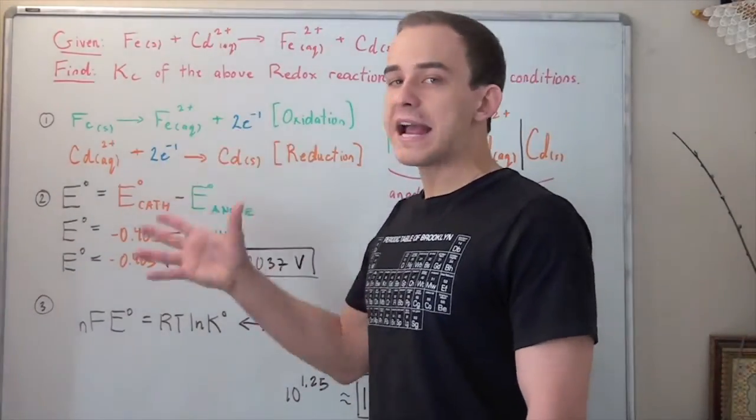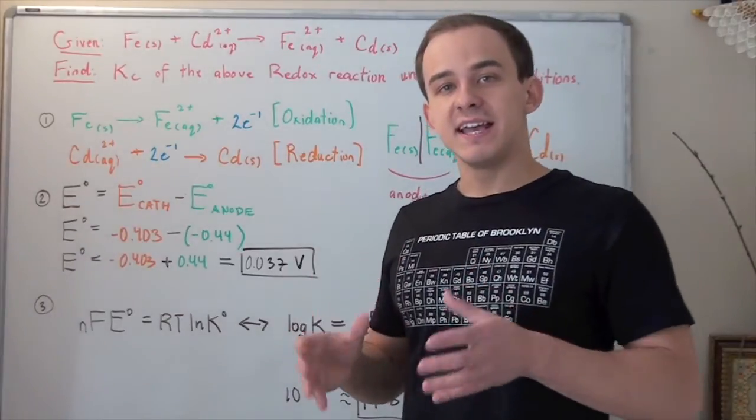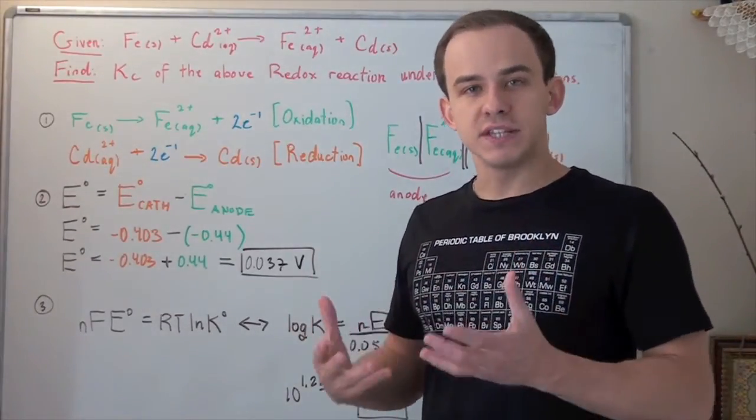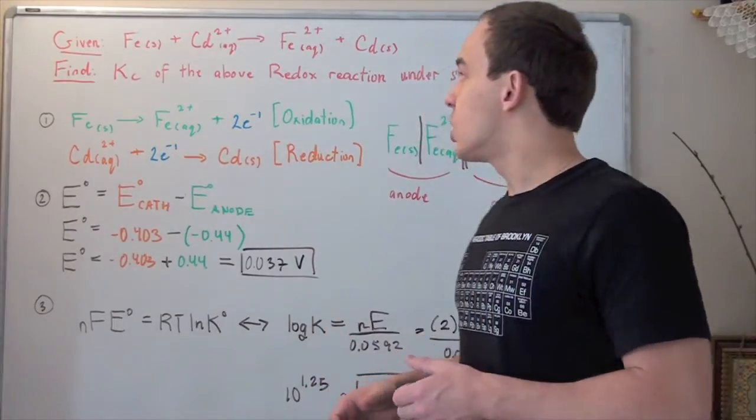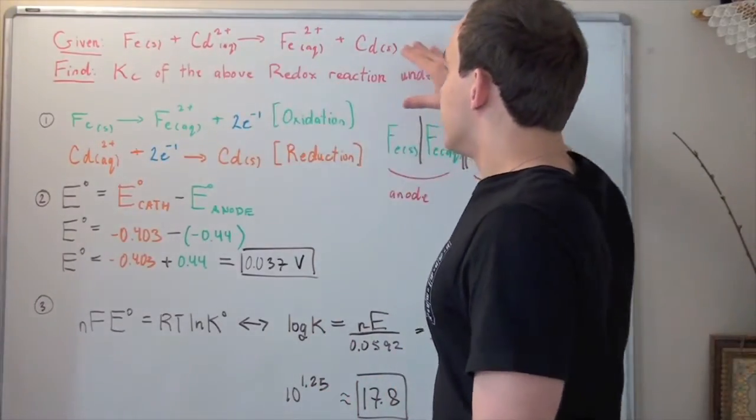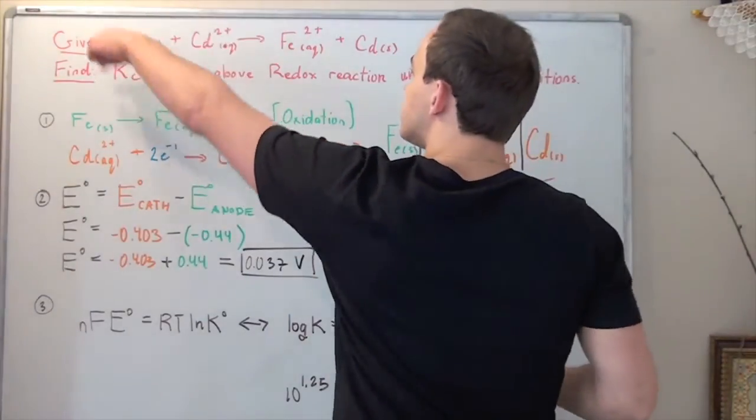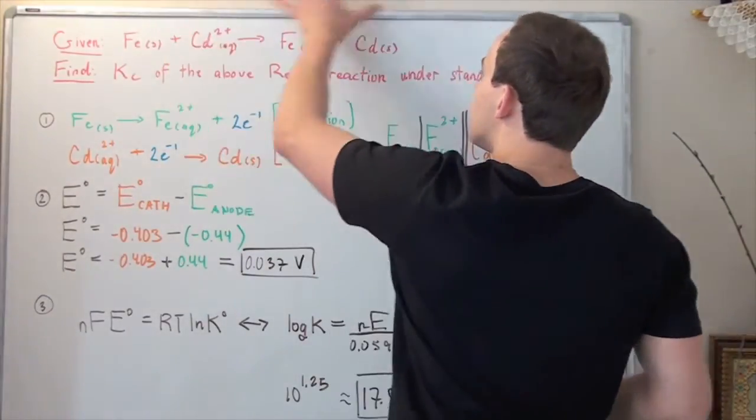What does that mean? If K is above 1, the reaction is product favored and spontaneous. The equilibrium lies on the right, meaning almost all the reactants are converted to products.